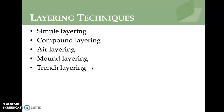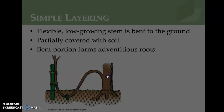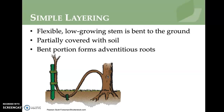There are several techniques: simple, compound, air, mound, and trench layering, which the next slides cover. Simple layering involves a flexible, low-growing stem bent to the ground, partially covered with soil, and then the bent portion forms adventitious roots.